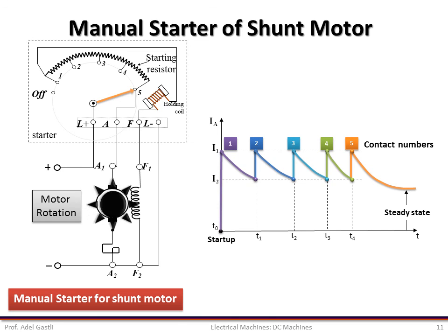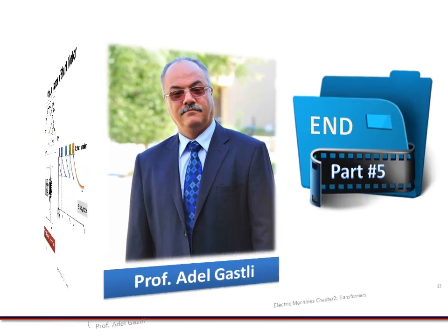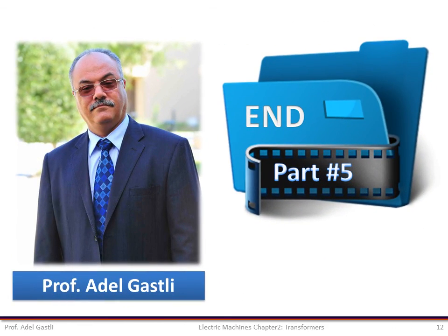With the variable terminal voltage method, copper losses do not increase and hence efficiency at starting is much better. Nowadays, with recent developments in power electronics, a soft starter with variable DC power supply has become more practical and economical, especially since it can also be used for speed control of the DC machine. This is the end of this part. Thank you for watching.